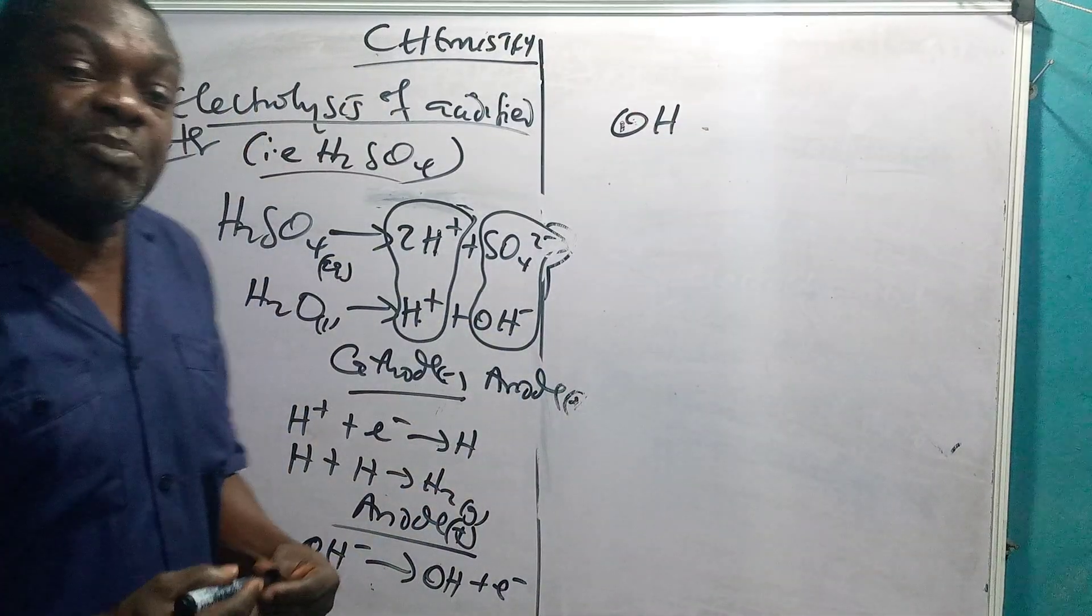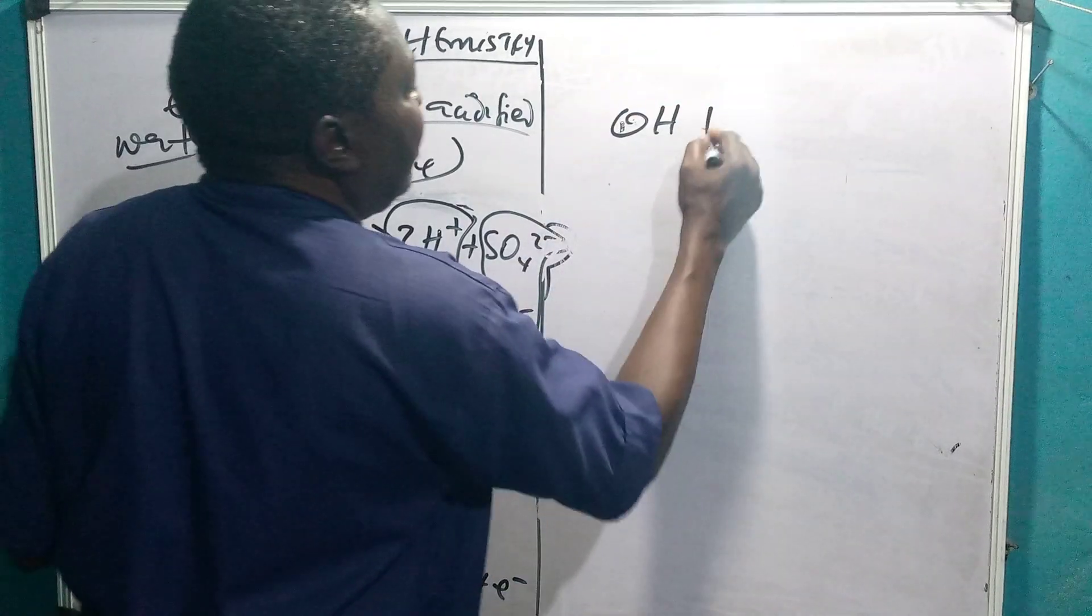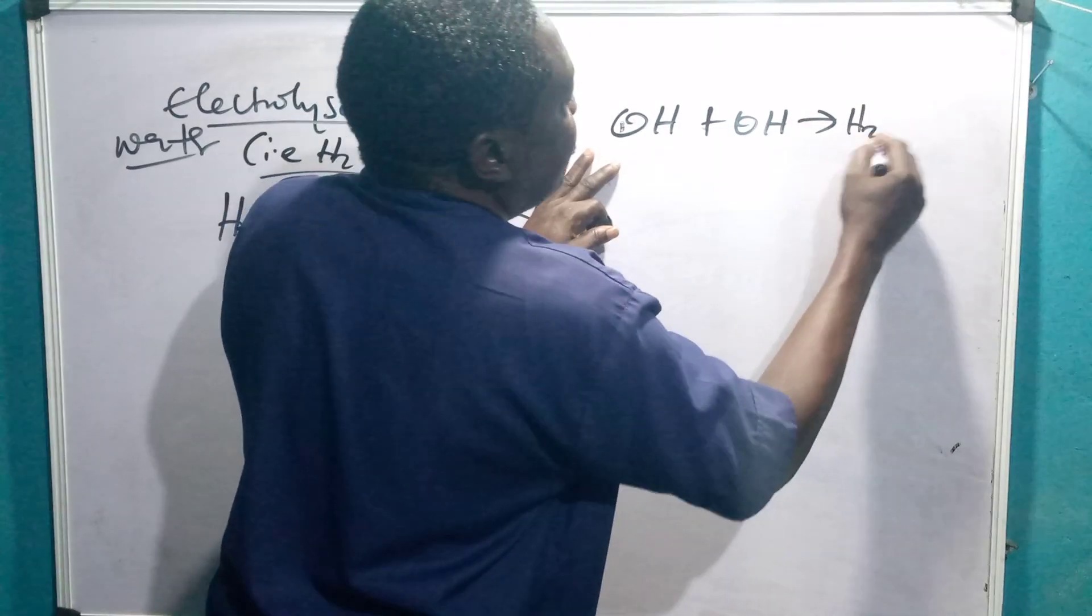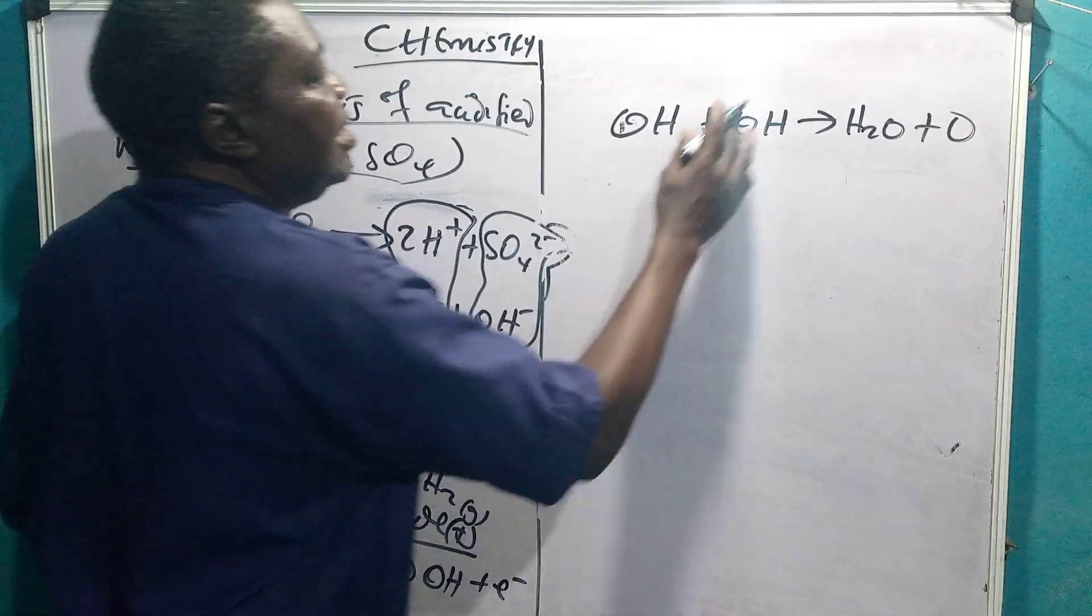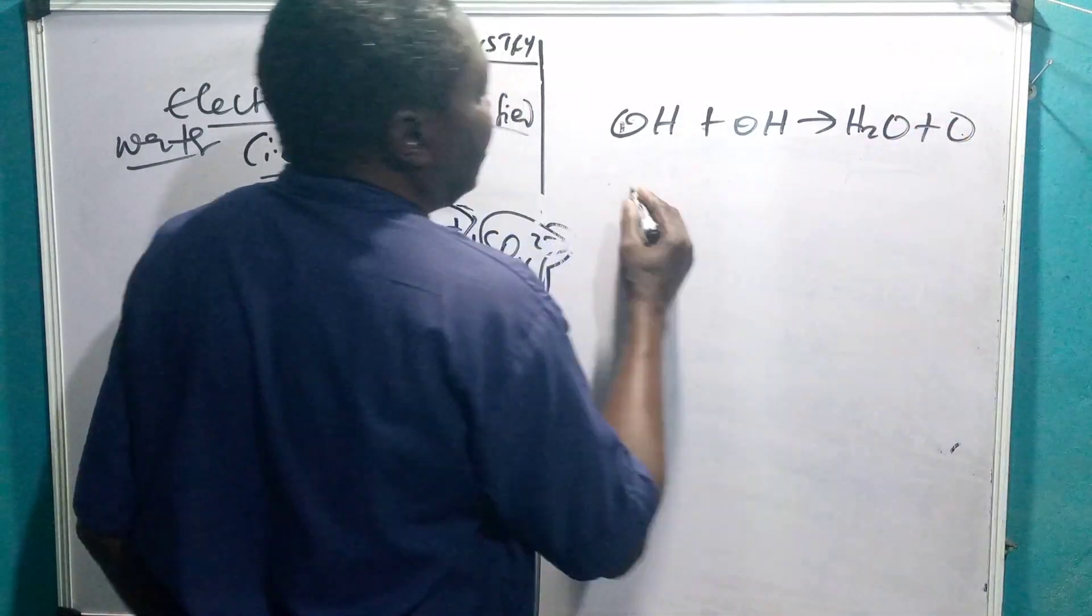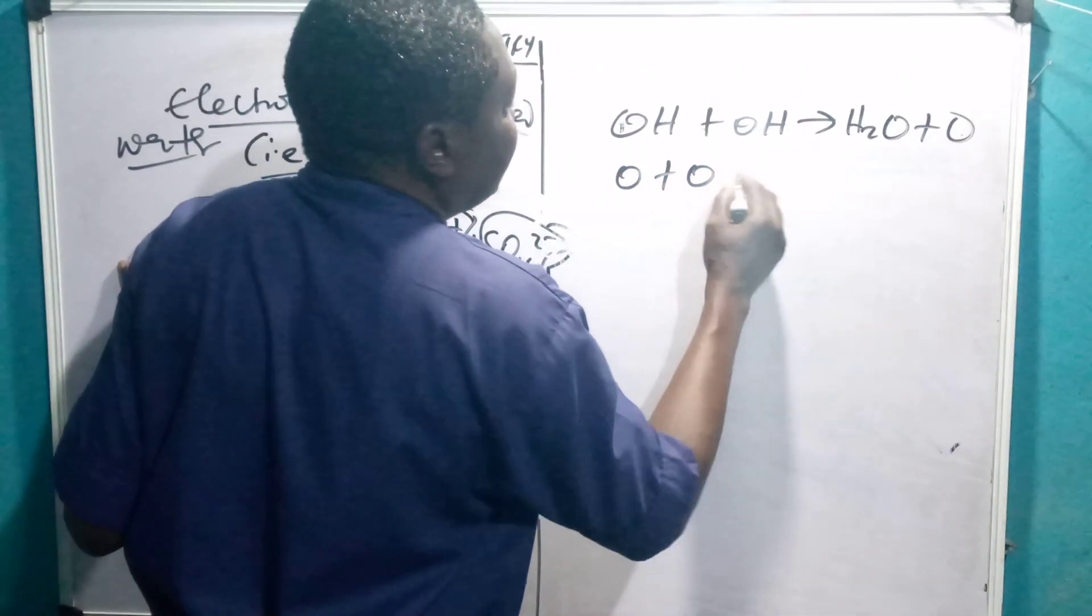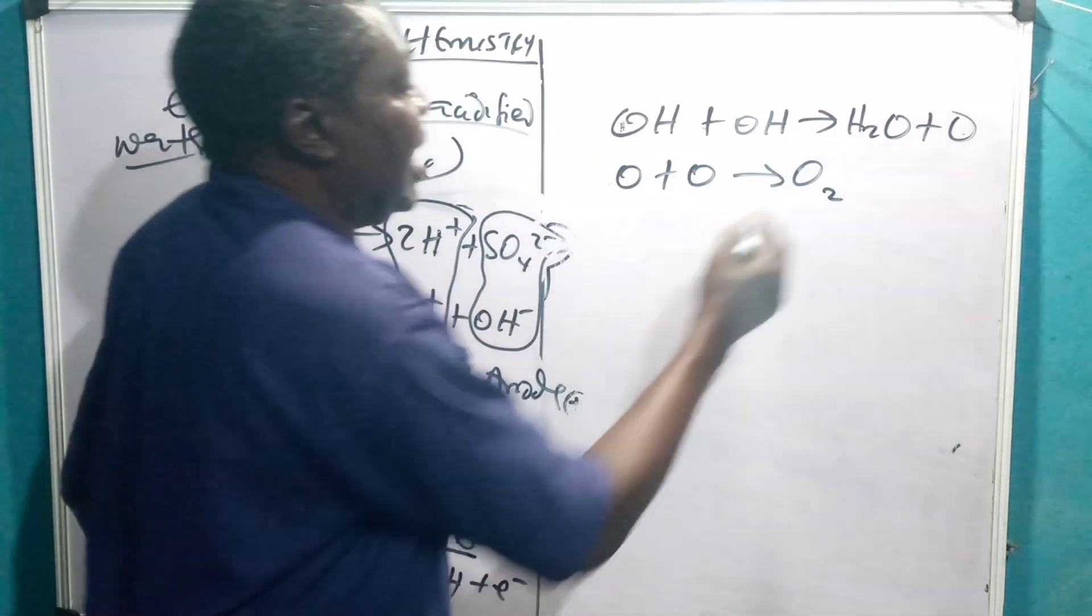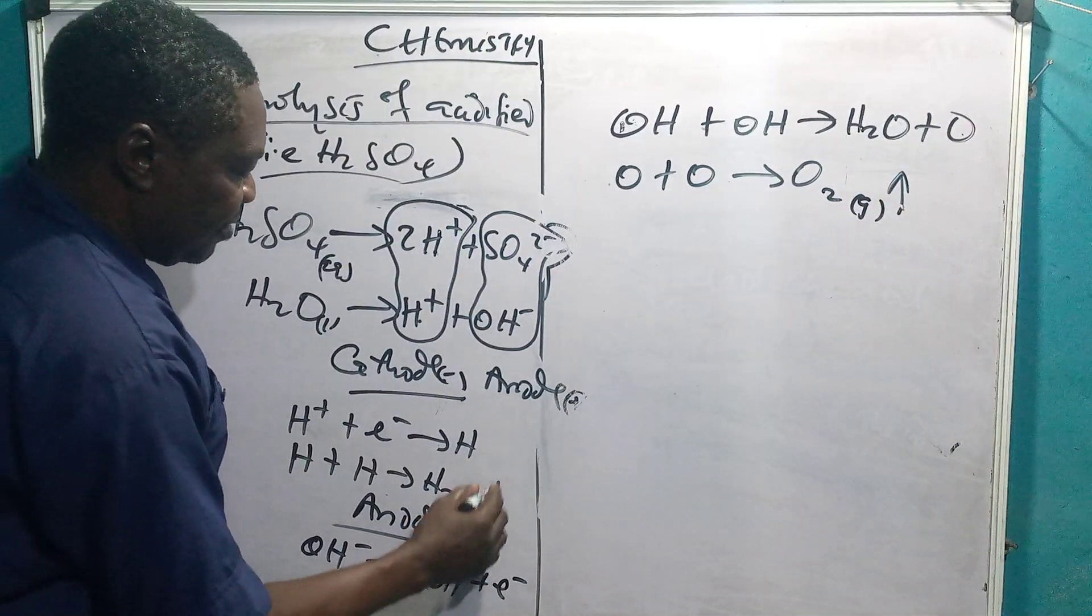This reaction, as I said before, happens in millions inside the same solution. Therefore, this one will combine with another OH to give you H2O plus oxygen. So that the equation will be balanced. This is water and it turns to a solution. Then this other one, which is oxygen, atomic oxygen, doesn't exist like that also. Will combine with another oxygen to form O2, which is a molecule of oxygen. And it will be given off as a gas. The same way hydrogen is given off as a gas.